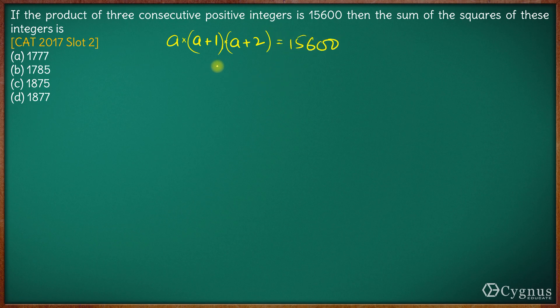Right, now I can say since the product of three consecutive numbers is 15600, the middle number is a+1, so (a+1)³ will also be somewhere around 15600. So let's figure out a number whose cube is somewhere around 15600, so we'll have to do some approximation here.